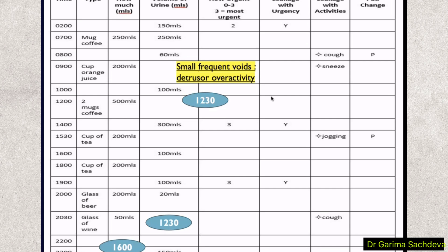She rated urgency from zero to three — she had urgency symptoms three times, and with that urgency there was also leakage, which is called urge incontinence. This indicates detrusor overactivity with urge incontinence, as whenever she feels urgency there is leakage and she is unable to control it. Additionally, with coughing and jogging there is also leakage, suggesting a mixed incontinence picture.